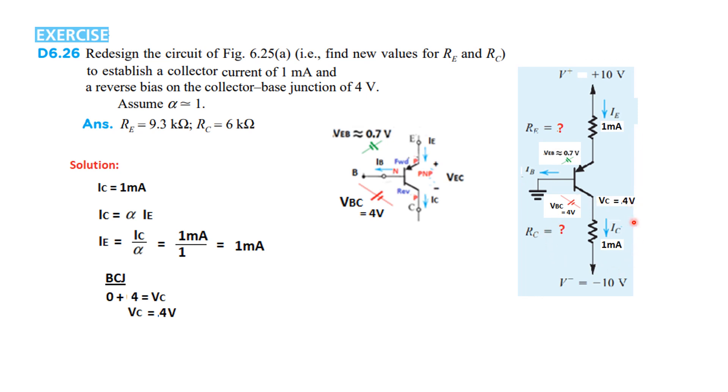So, from here we can find RC. Now, we know VC. We know this voltage 10, we know this current. So, RC will be 4 minus minus 10 divided by 1 milliampere is equal to 6 kilo.